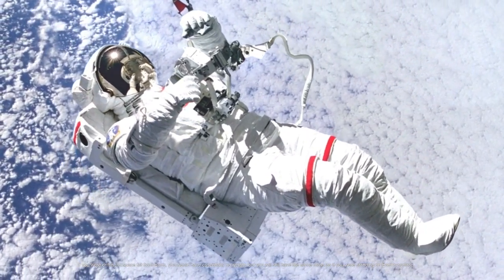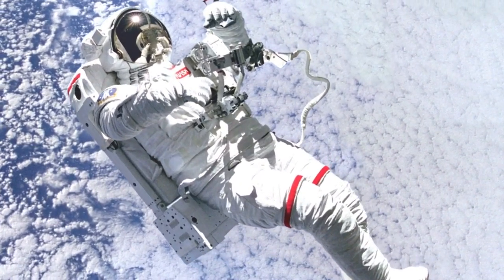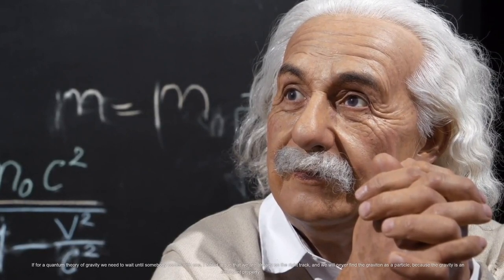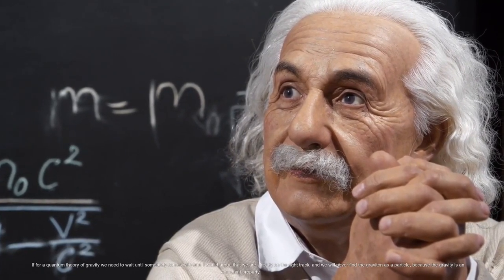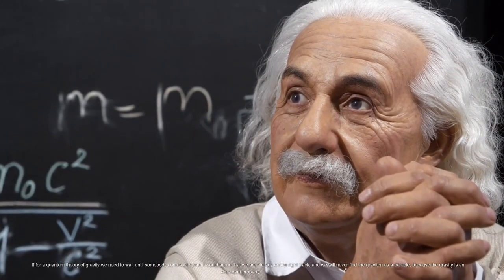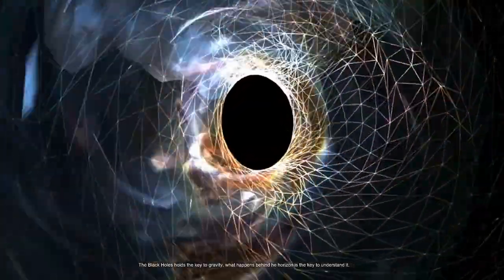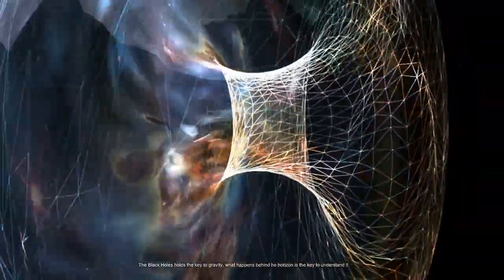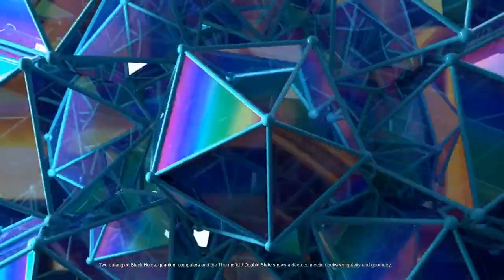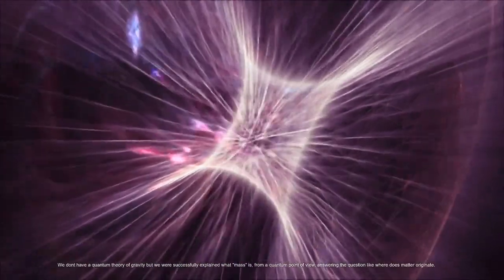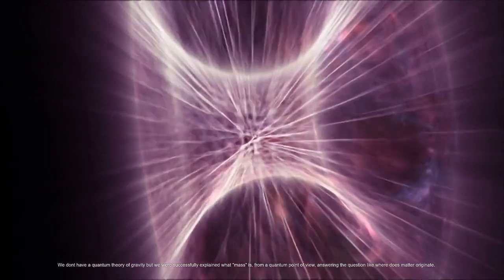For a quantum theory of gravity we need to wait until somebody comes with one. I would argue that we are already on the right track and we will never find the graviton as a particle because gravity is an emergent property. The black holes hold the key to gravity; what happens behind the horizon is the key to understand it. Two entangled black holes, quantum computers, and the thermofield double state show a deep connection between gravity and geometry. We don't have a quantum theory of gravity but we have successfully explained what mass is from a quantum point of view, answering the question of where does matter originate.